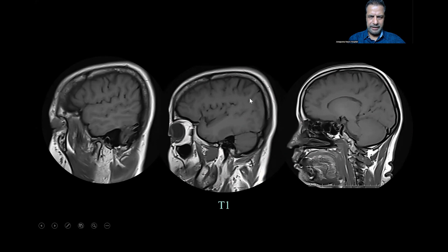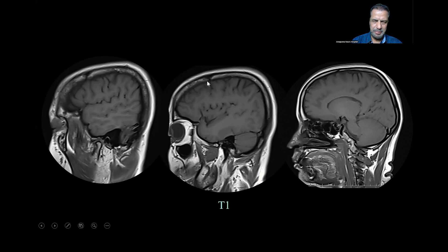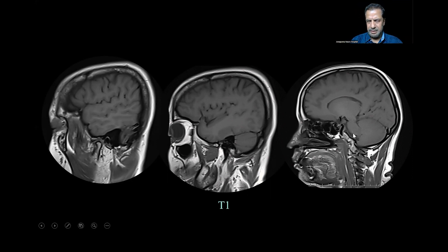The coronal suture is seen again — that's also a very important landmark when operating. If you are confused about the central sulcus in the center, you can go a little bit lateral and then determine where it is. As you go a little bit further medially, you can see the cerebral peduncle and a little bit of the pons. The cerebellum is being seen there, and that's the occipital lobe.